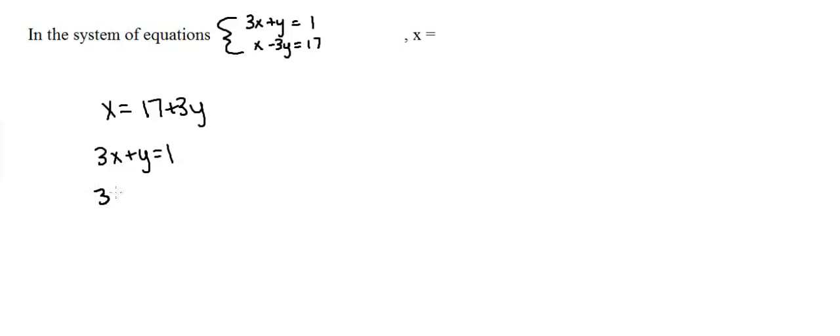Now plugging that in, we'll get 3 times 17 plus 3y plus y equals 1. Now multiplying this out, we're going to get 17 times 3, which is 51. So we're going to get 51 plus 9y plus y equals 1.